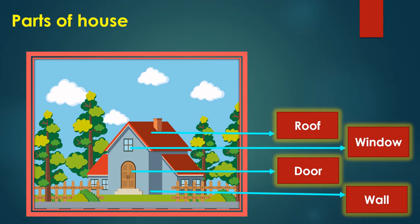Let us see the parts of a house. A house has a roof at the top, then we have windows, a door, and walls.